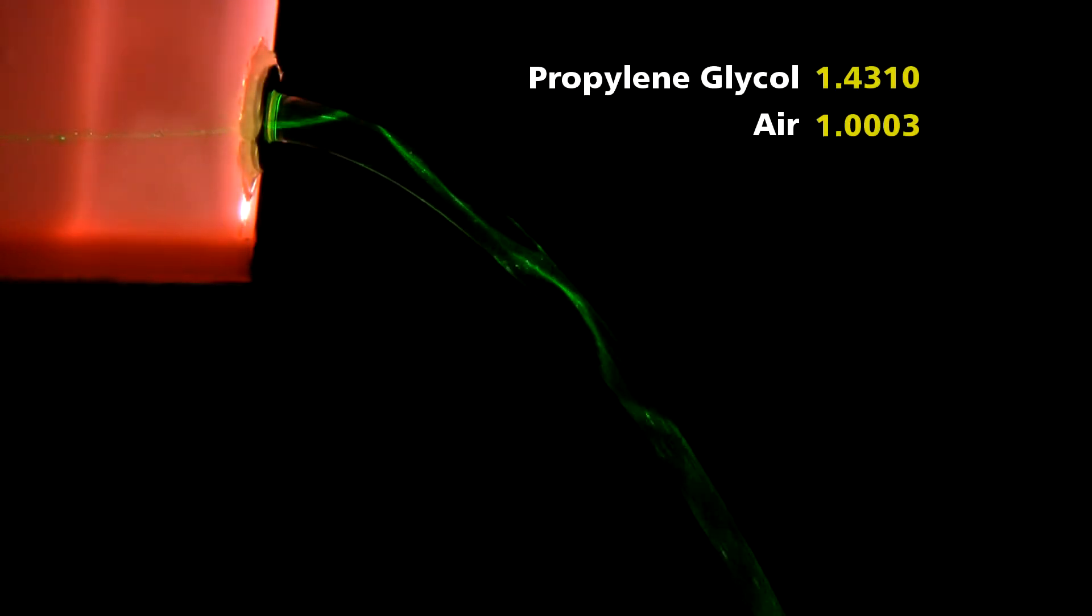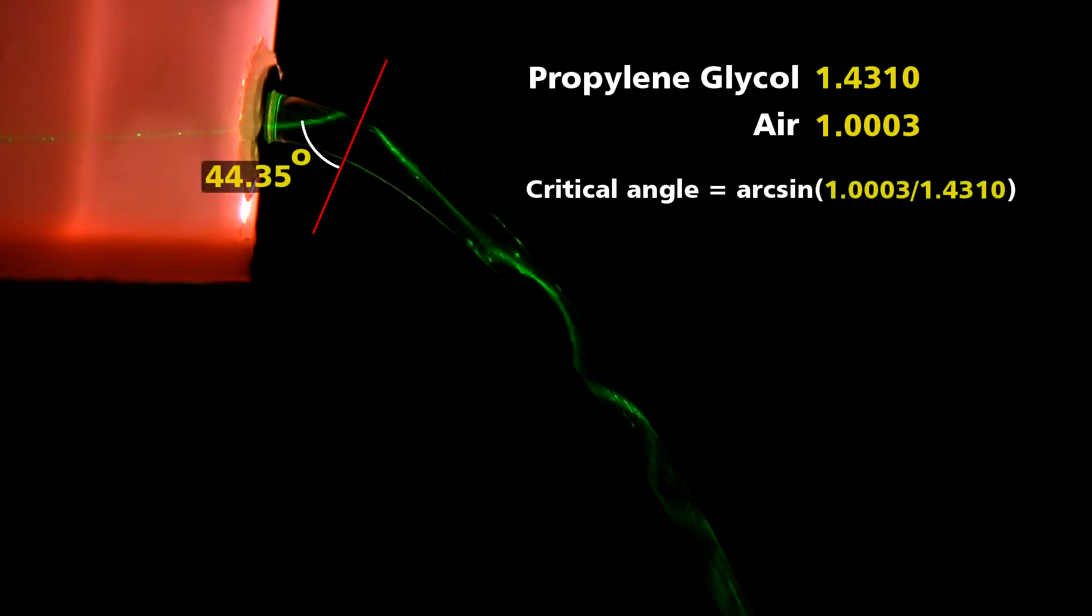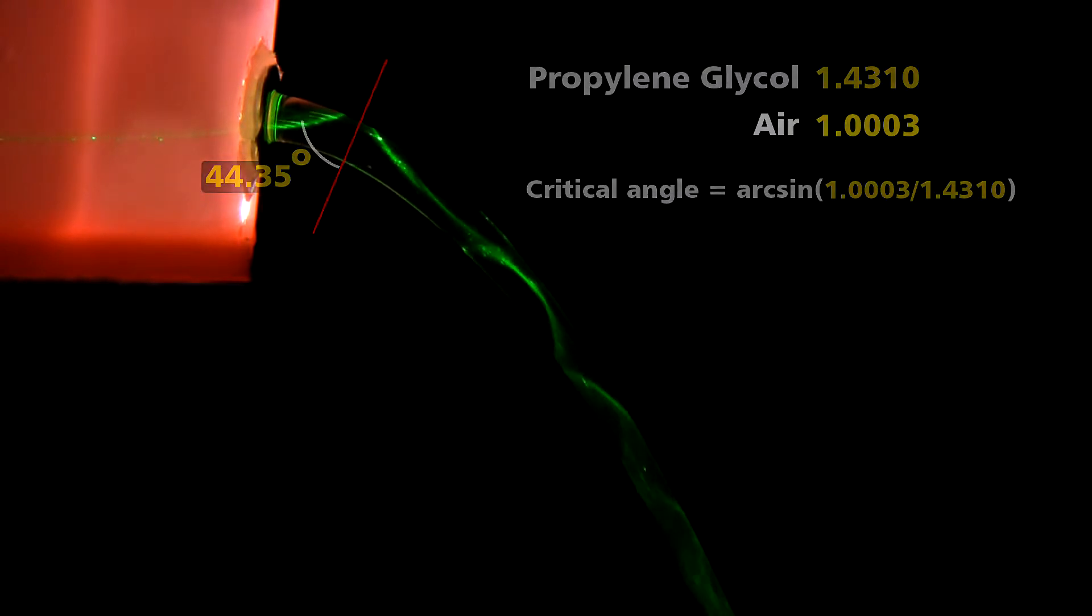For this propylene glycol and air system, as long as a beam hits the surface at an angle greater than 44.35 degrees measured from the normal, it will propagate down the stream via total internal reflection. To create this same effect in an optical fiber,